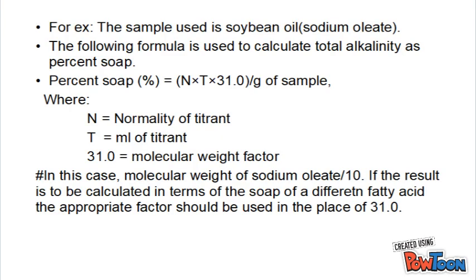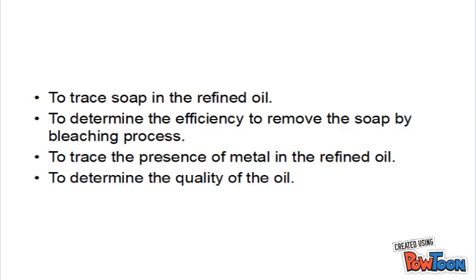Calculation. For example, if the sample used is soybean oil, the following formula is used to calculate the total alkalinity as percent soaps: Percent soaps = (N × T × 31.0) / grams of sample, where 31.0 is the molecular weight factor for the fatty acids.